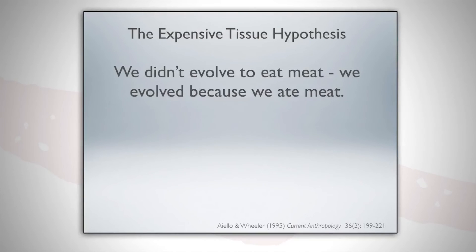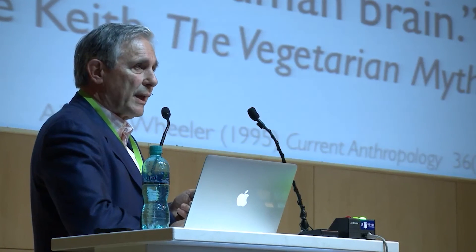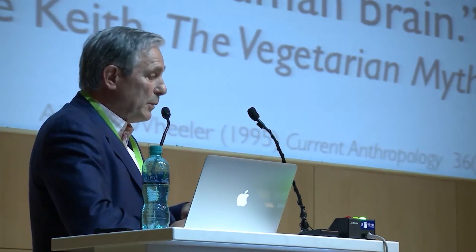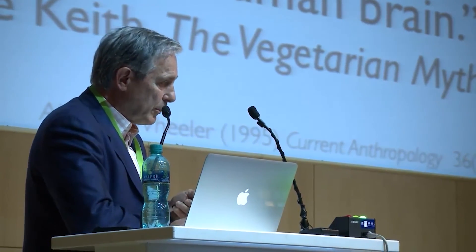What it all boils down to is: we didn't really evolve to eat meat — we evolved because we ate meat. It was put much more eloquently by a friend of mine: 'The wild herds of aurochs and horses invented us out of their bodies, their nutrient-dense tissues gestating the human brain.' And that's exactly what happened. If you know anybody that's a vegetarian that you want to break from it, get this book — 'The Vegetarian Myth' by Lierre Keith. It's absolutely wonderful, beautifully written.